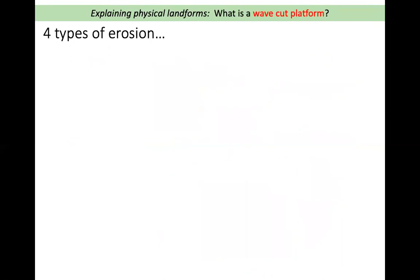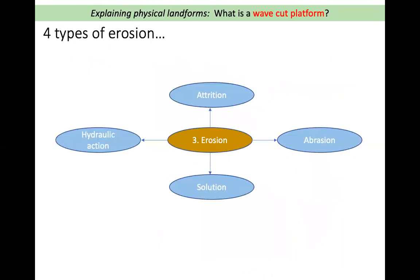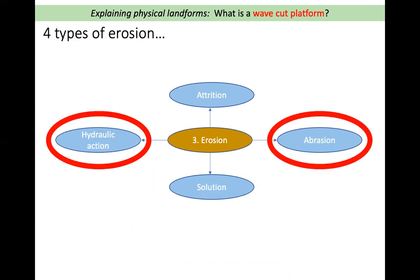Now we already know that there are four types of erosion: attrition, abrasion, solution, and hydraulic action. Now these are all involved in wave-cut platforms but there are two that are particularly important and we are going to focus on. These are hydraulic action and abrasion.